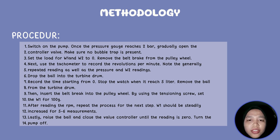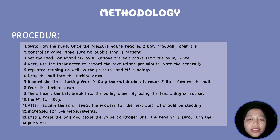Repeat the reading as well as the pressure and W2 reading. Drop the ball into the turbine drum and record the time starting from zero. Stop the watch when it reaches 5 liters, then remove the ball from the turbine drum. Insert the belt into the pulley wheel using the tensional screw. Set W1 to 100 grams. After taking the reading, note the RPM and repeat the process for the next step. W1 should remain steady.